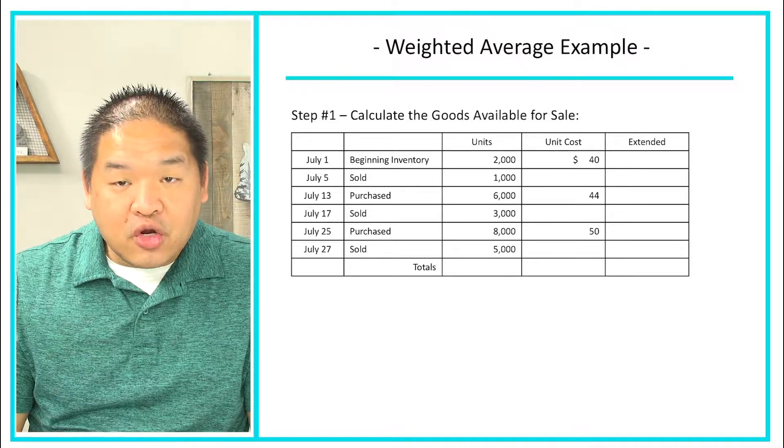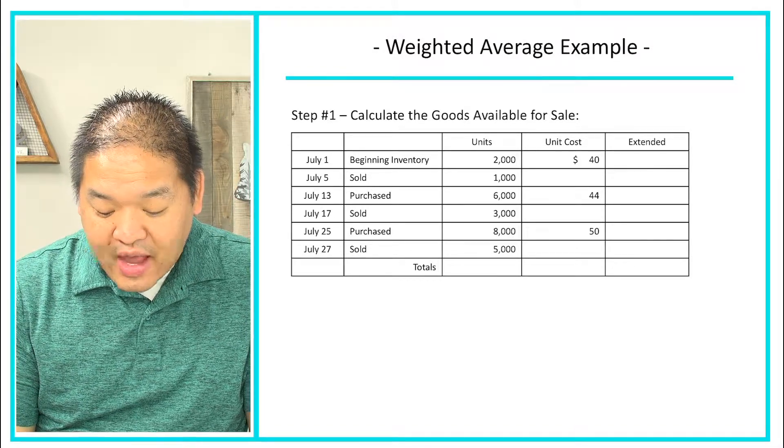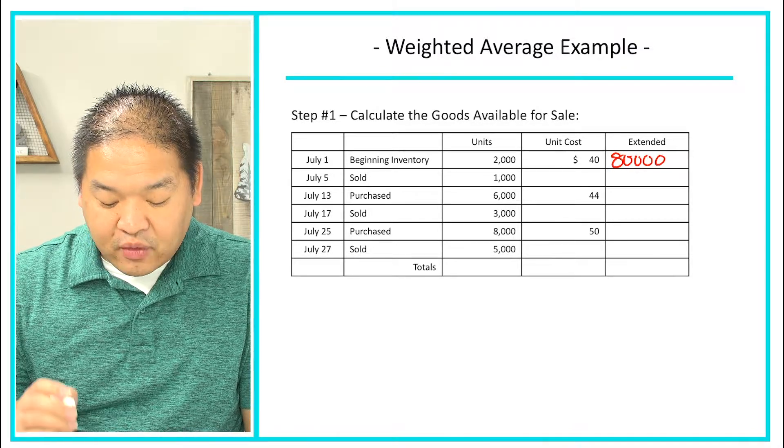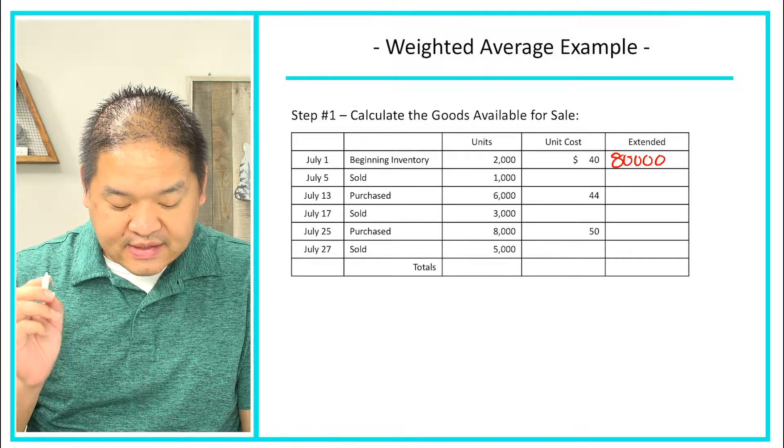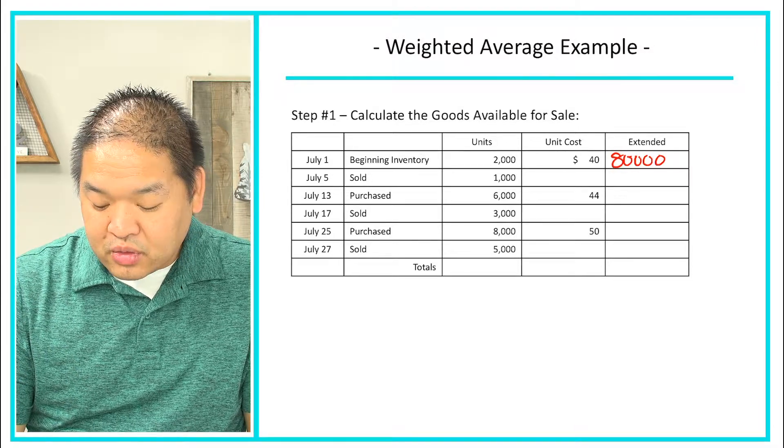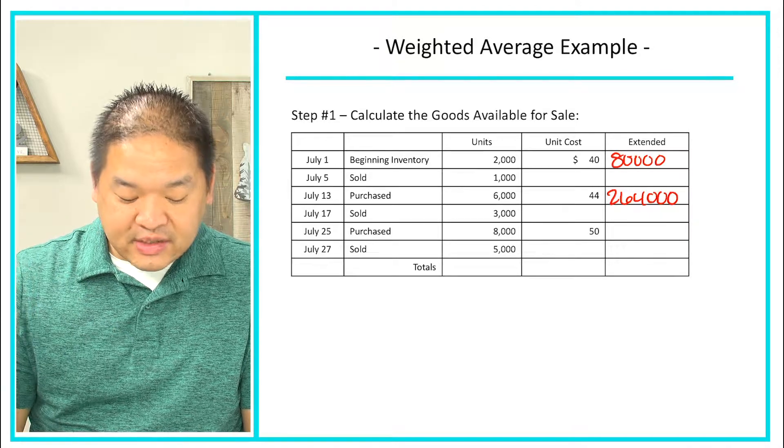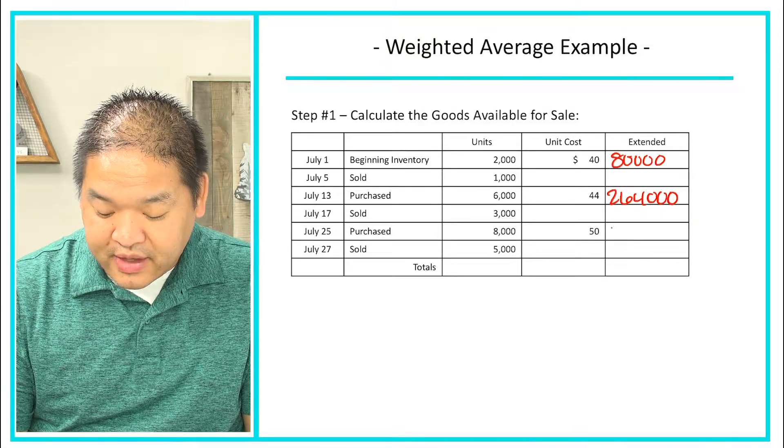Alright, so we're just looking at beginning inventory and purchases. So if I multiply across, I'm going to get 2,000 times $40 which is going to give me $80,000. And then for July 13th I've got 6,000 times $44 which gives me $264,000. And then 8,000 units at $50 apiece gets us $400,000.